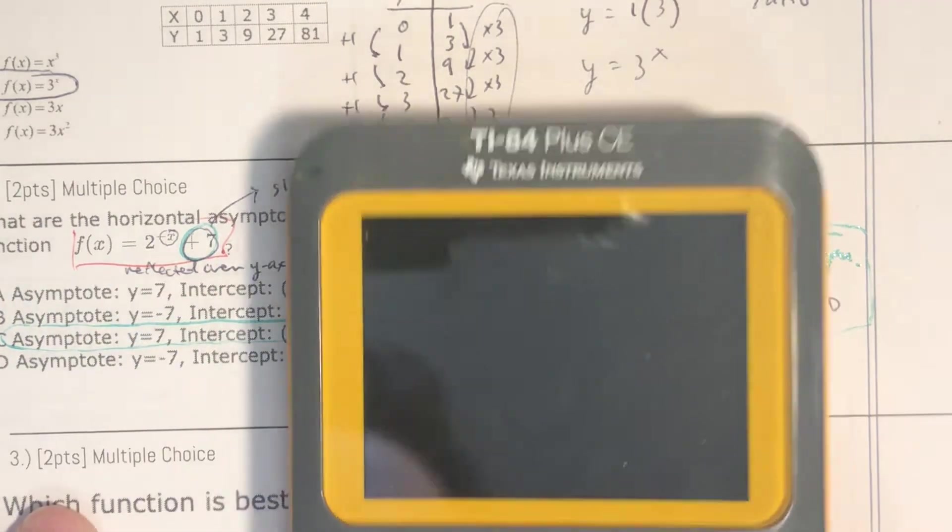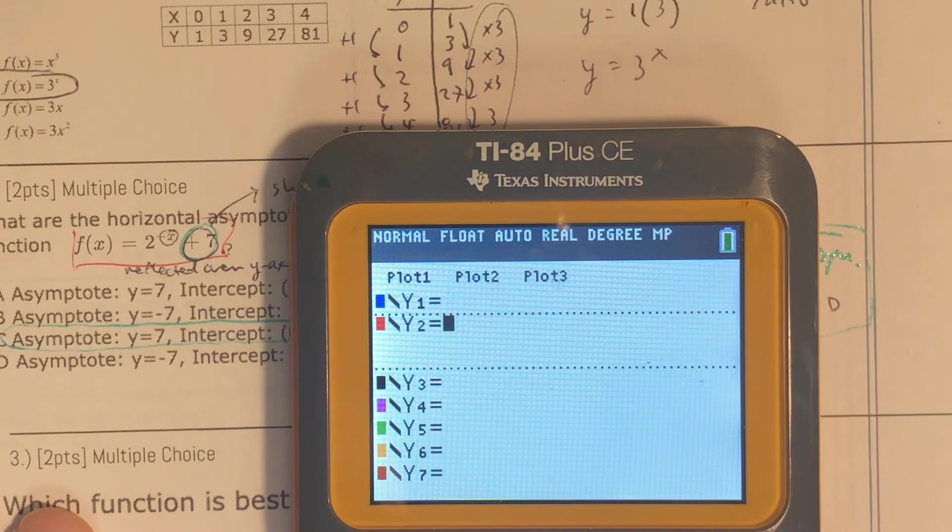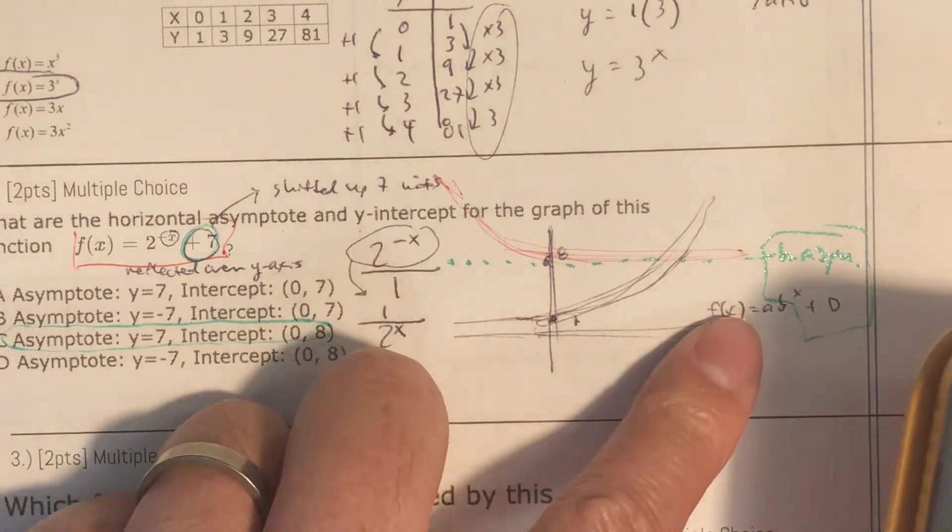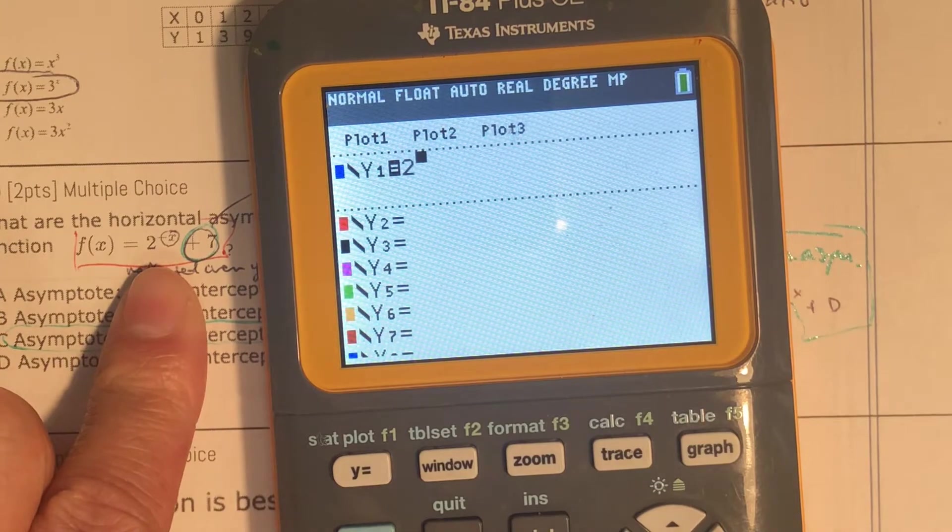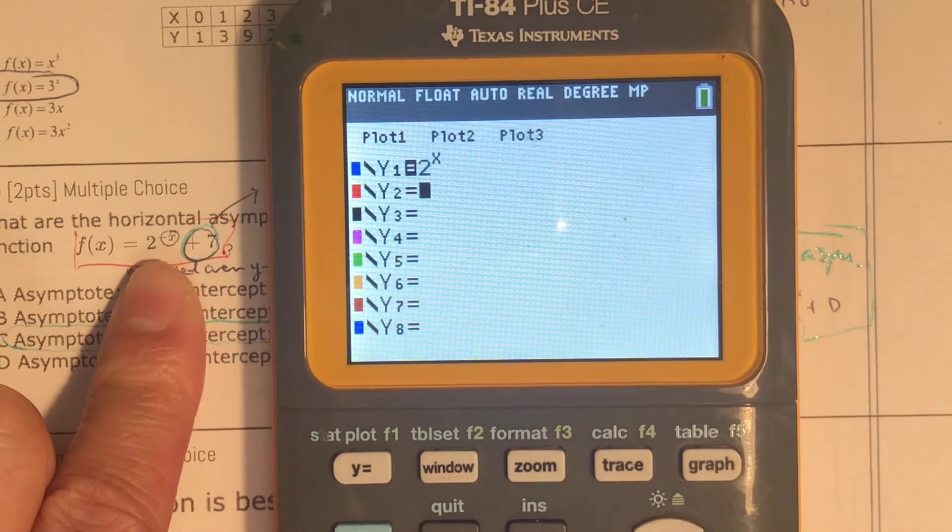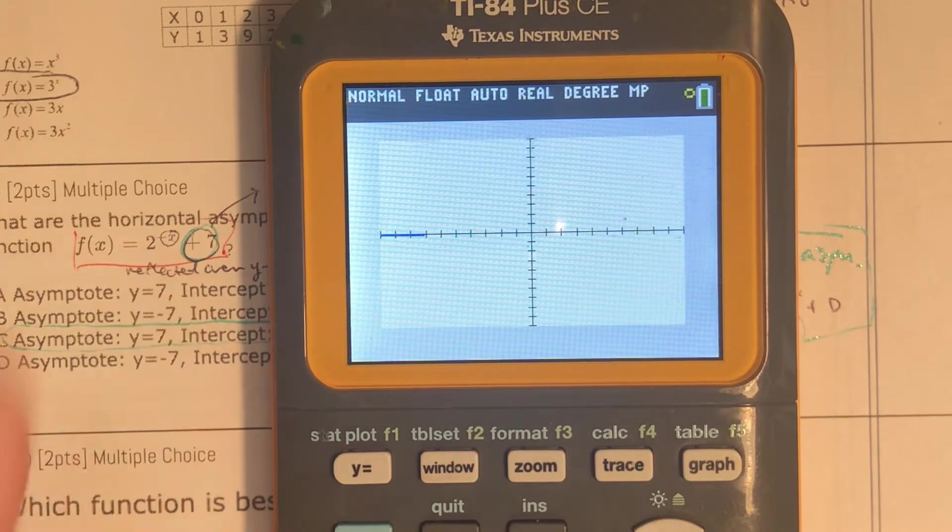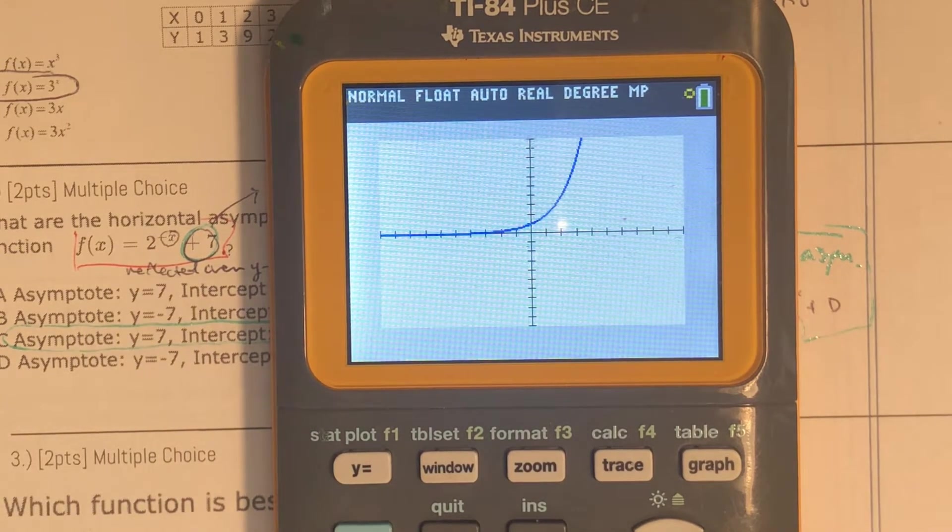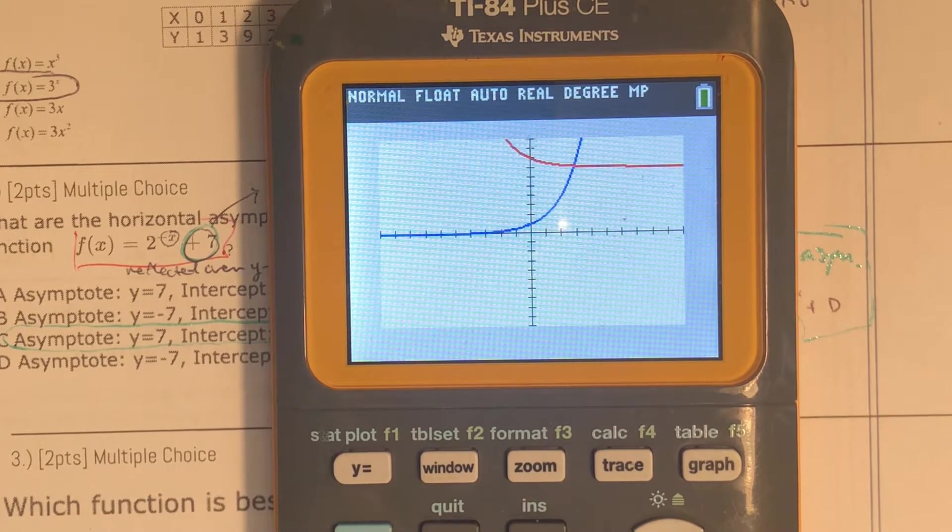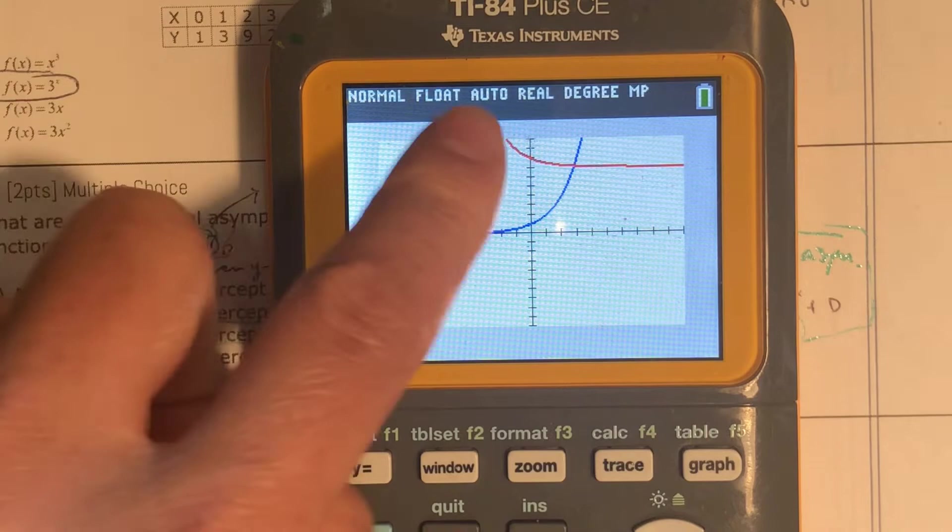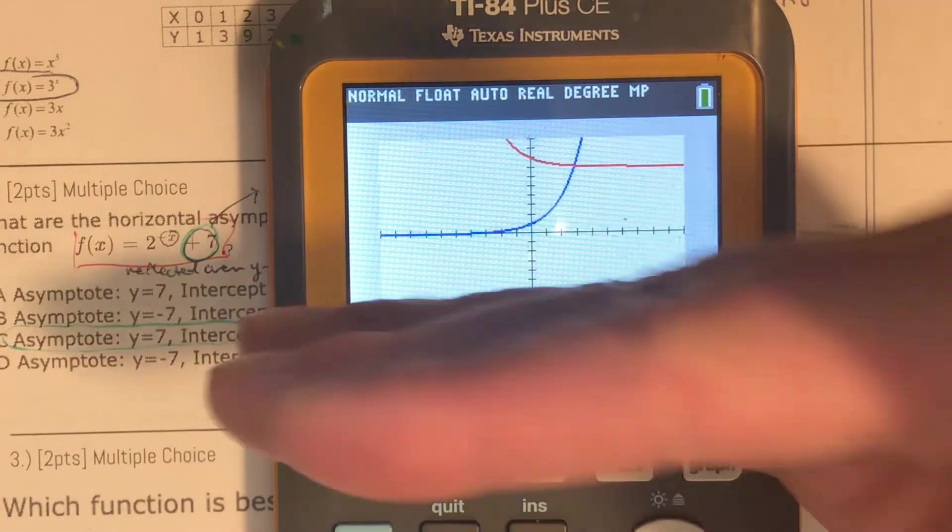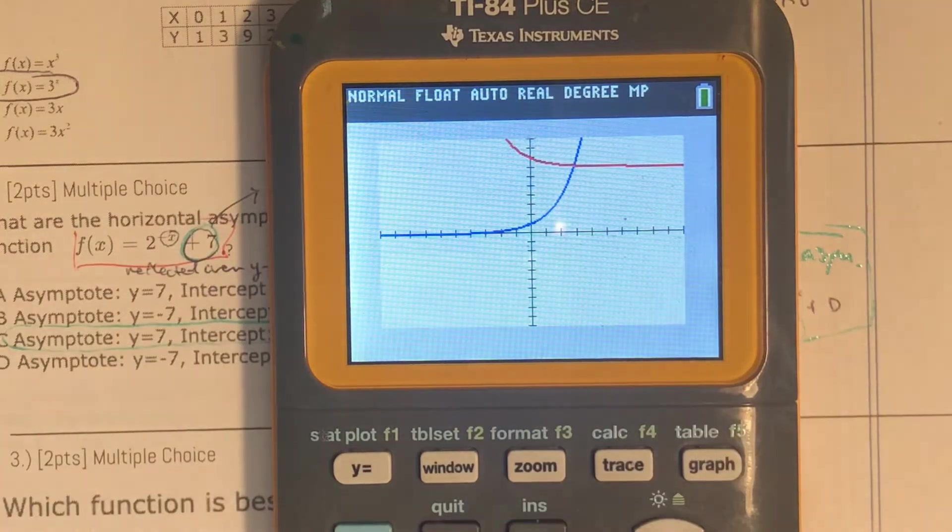And if you put that into your calculator, let's do the parent graph first. So just 2 to the x and 2 to the negative x plus 7. There's the parent graph to the x power. And then there is your other function, g of x, the red one. So you can see how it's been shifted up 7 units and then spun around the y-axis.